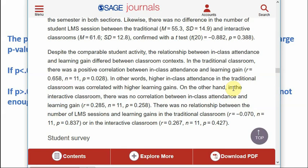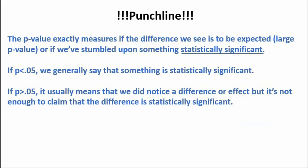On the other hand, in the interactive classroom there was no correlation between in-class attendance and learning gain. The p-value here was greater than 0.05. Students who attended class more may have had somewhat different learning gains than those who didn't, but that difference wasn't big enough or significant enough to say there is definitely a relationship — that in the interactive classroom you definitely need great in-class attendance to have the same learning gains.